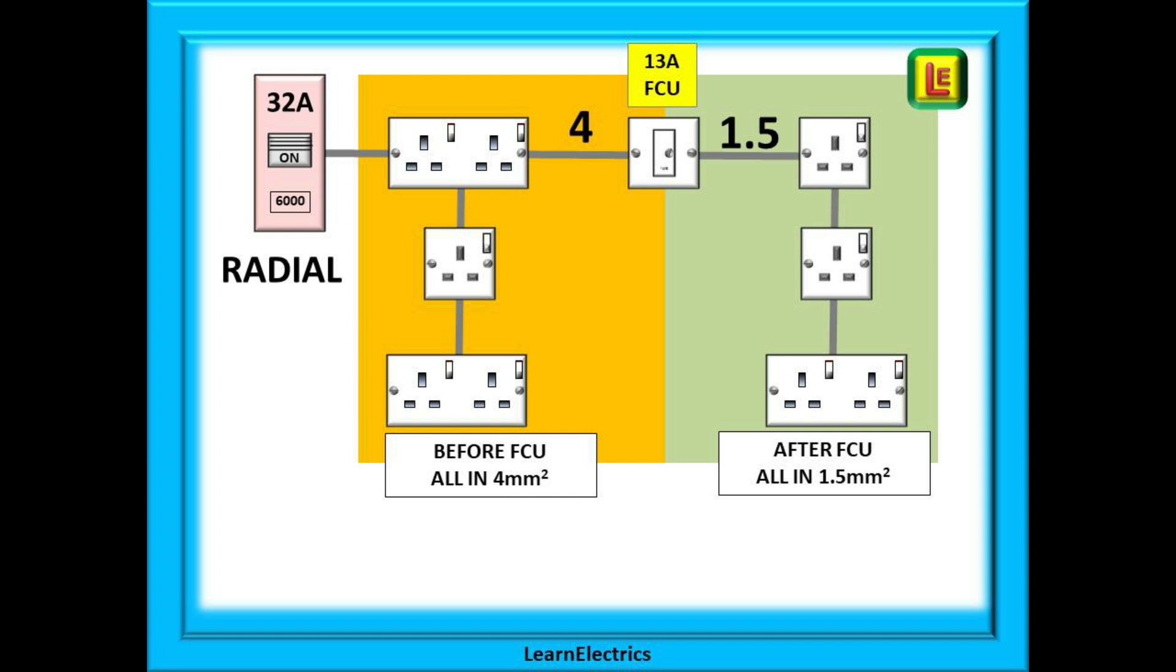If we introduce a 13 amp FCU, a fused connection unit, into the 32 amp circuit we can reduce the cable size after the FCU. All the cabling up to and into the FCU must be in 4 mm size but cables after the FCU can be reduced to 1.5 mm CSA.